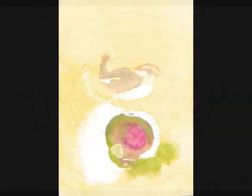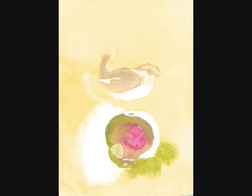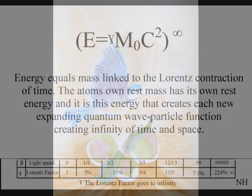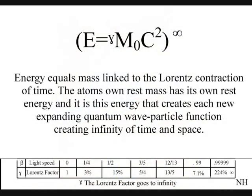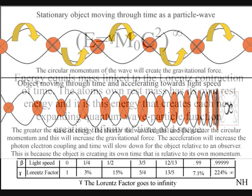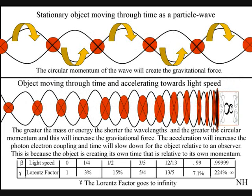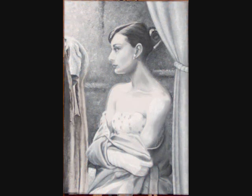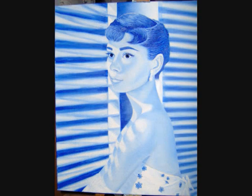This can also explain why light is so beautiful when it strikes an object — it is because we are looking at a moment of pure creation of time and space. In quantum atom theory, we live in a universe of multiple spacetimes, and each spacetime is governed by the Lorentz contraction of time. The greater the mass or energy of an object, the larger or more rapid the particle wave function collapse. This will increase the number of photon-electron couplings, increasing the delay factor, and time will slow down relative to an observer in the object's own created space-time or reference frame.